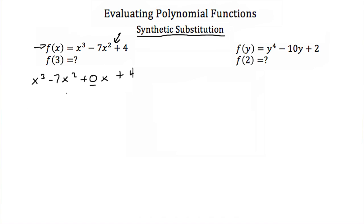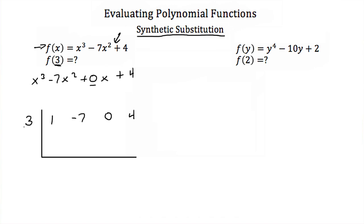Now that we've written this out, we write down our coefficients: 1, −7, 0, and 4. We write an upside-down division sign, and on the outside we write the number we're evaluating for — in this case, 3. The first step is to take your first coefficient, in this case the 1, and carry it all the way down outside of your division sign.